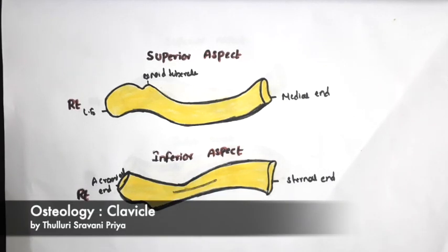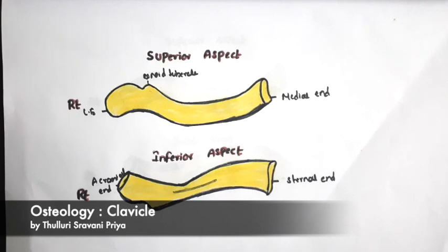To repeat the peculiarities: this bone does not contain a medullary cavity; it is subcutaneous; it starts ossification earlier in the body and completes ossification last; it ossifies in the membrane by two primary centers and one secondary center; it is a long bone lying horizontally; and it is pierced by the middle supraclavicular nerve occasionally.